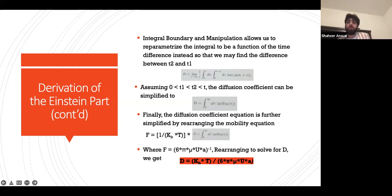Finally, the diffusion coefficient equation is further simplified by rearranging the mobility equation, and we get F = 1/(k_b * T) * D.